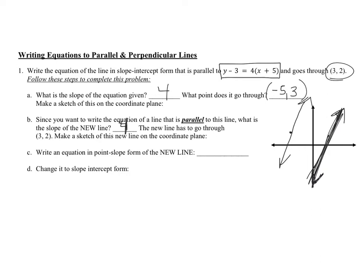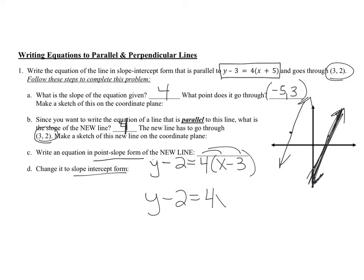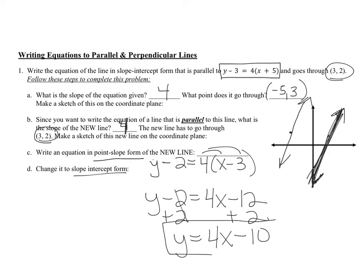To write the equation of the new line, start in point-slope form: y minus 2 equals 4 times (x minus 3). Then convert to slope-intercept form by distributing: y minus 2 equals 4x minus 12. Add 2 to both sides to get y equals 4x minus 10. That's the equation of the new line, and the y-intercept of negative 10 matches our prediction.